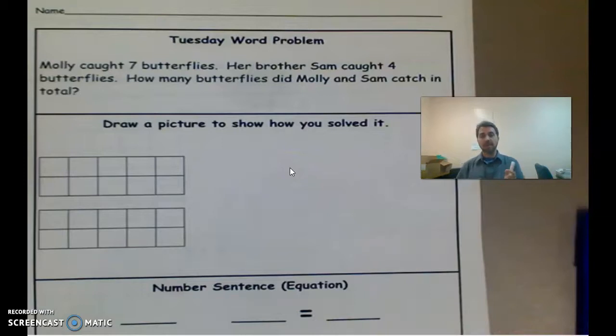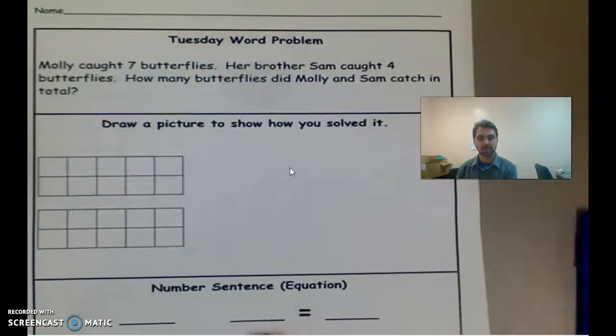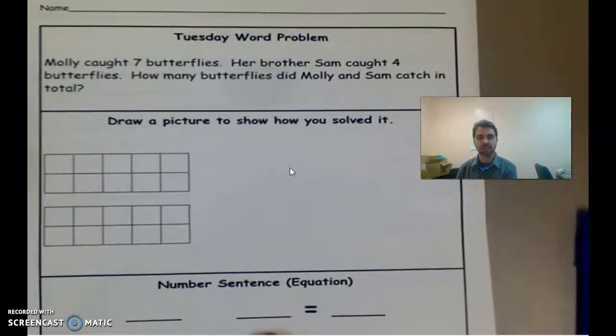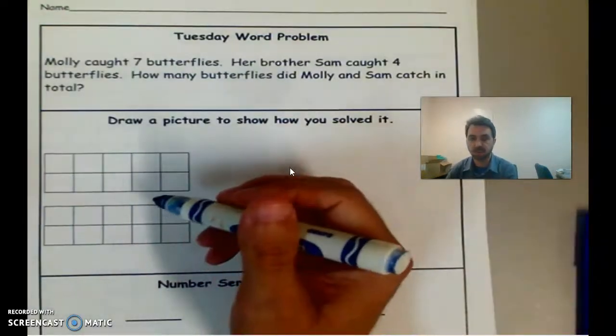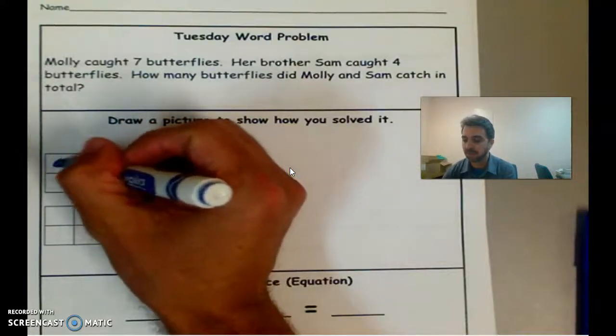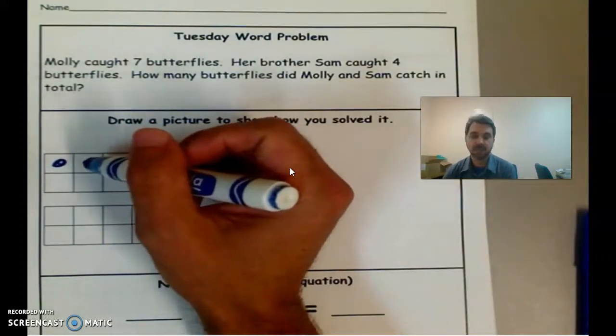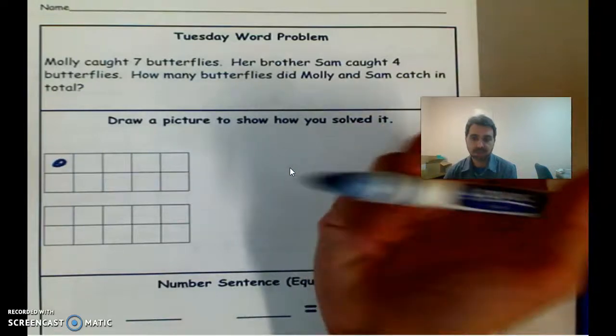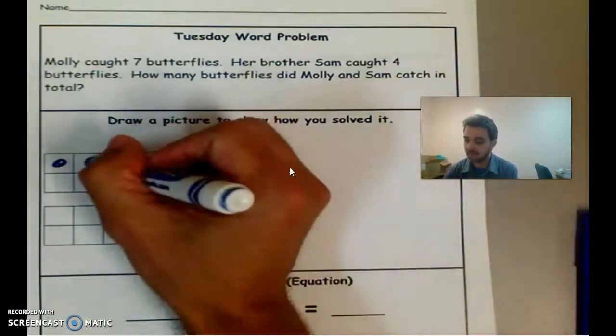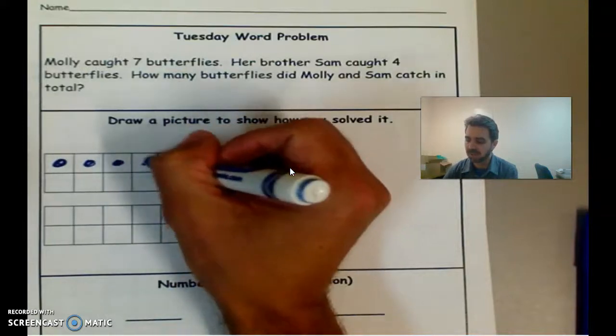All right, so if you haven't already, please take out your math packet that has your Tuesday Word problem. Okay, it's the same problem that we just did on the math app. So I'm going to show you what this would look like, okay? So we have seven butterflies, and that Molly caught, and four that Sam caught. So let's do, I'm going to do blue and yellow. I'll show you why in a second. But you can do any color that you want, okay? If you have two different colored pens, or colored pencils and markers, that's great. If not, use a pencil and a pen if you can, okay? It's not the end of the world.